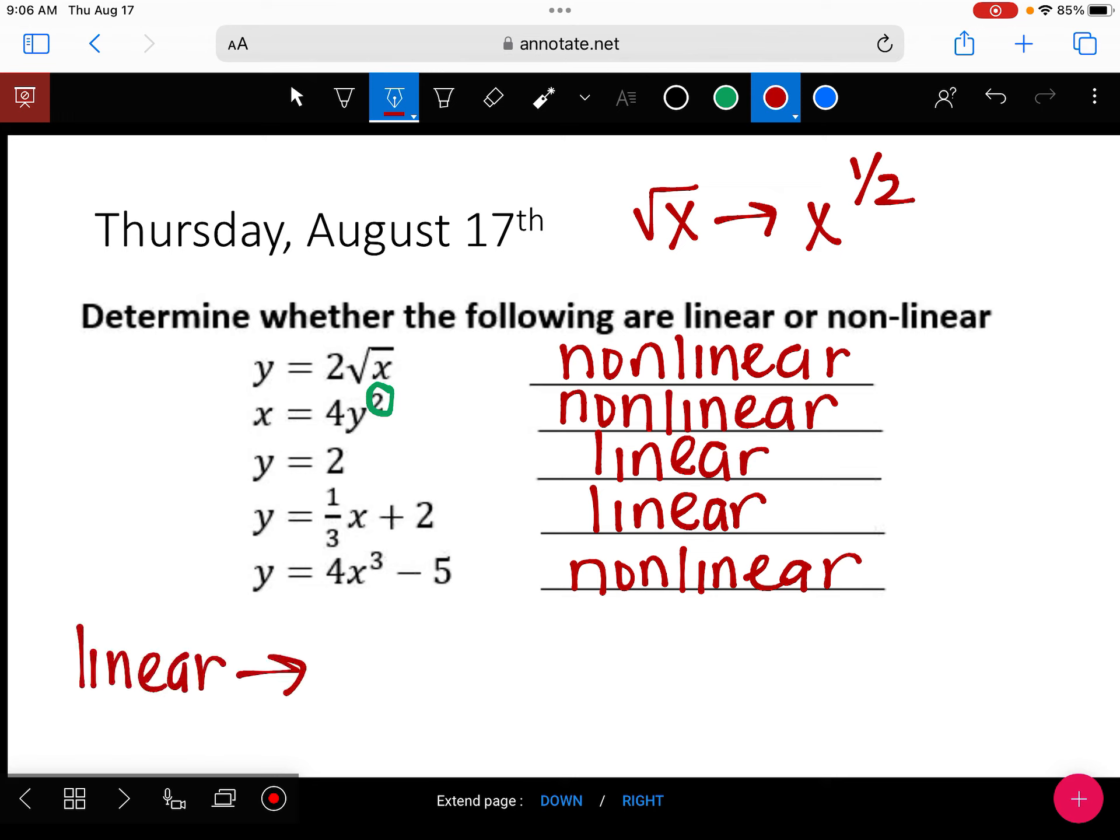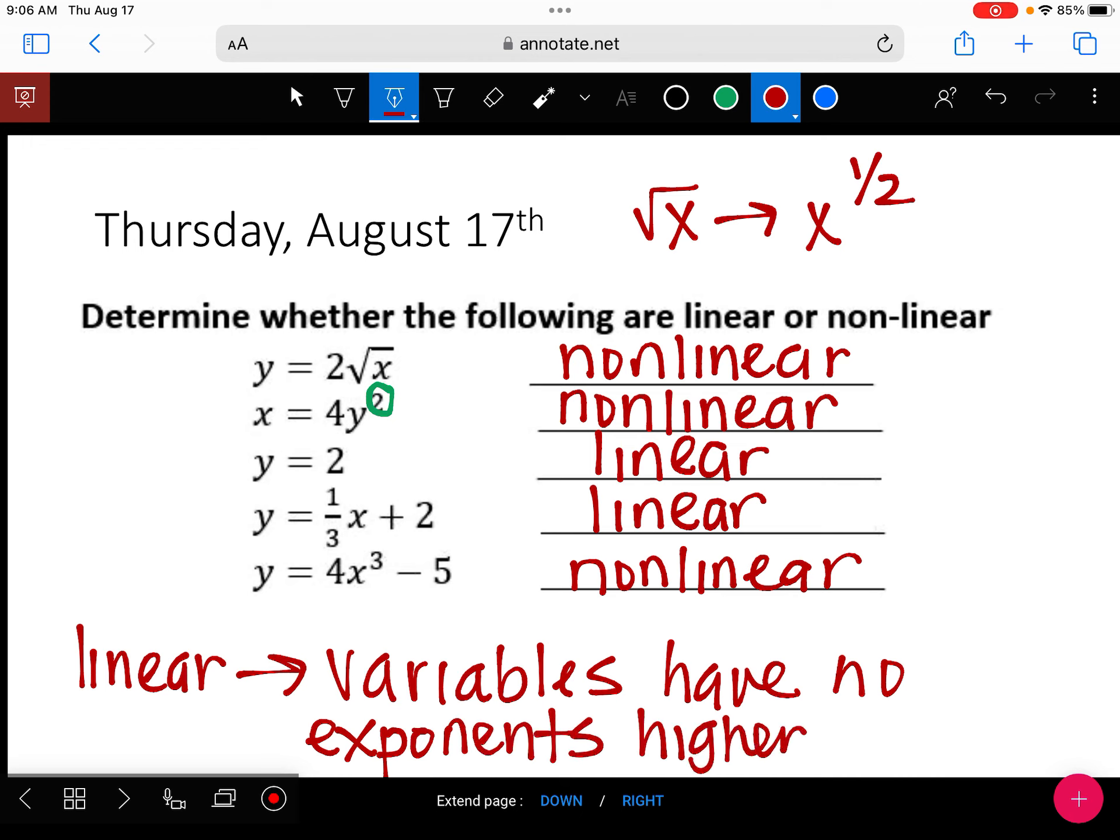I'm just going to rewrite that definition. Variables have no exponents, or have no exponents higher than one, I should say. And that's all that's to it when you're looking at an equation. As long as you don't have an exponent higher than one, it's linear. And the square root does count as an exponent. It's an exponent that's a fraction.